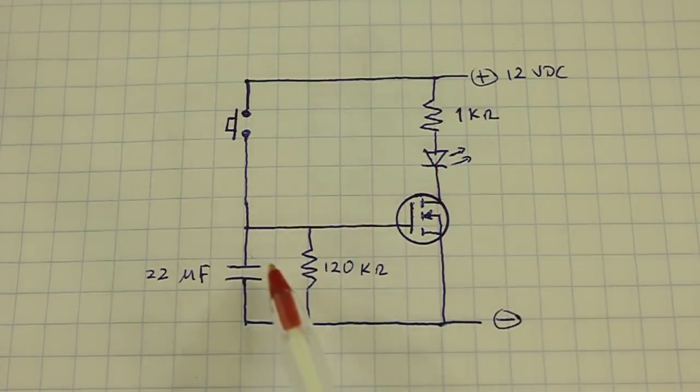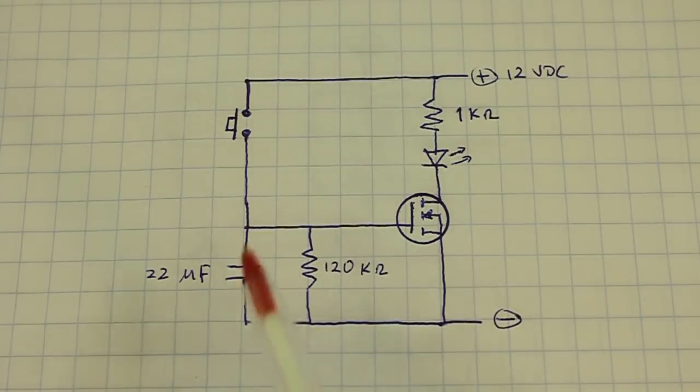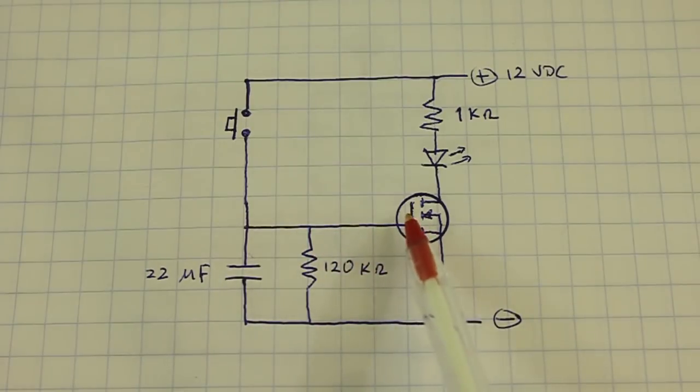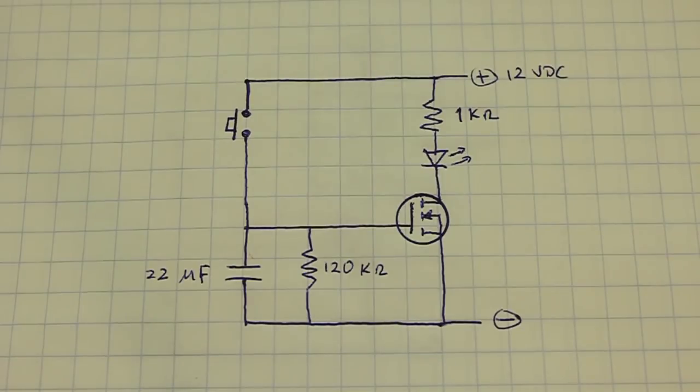But at the same time, this capacitor is charged. So when the push button is open, the capacitor applies a voltage to the gate of the MOSFET. So the LED continues to be turned on.